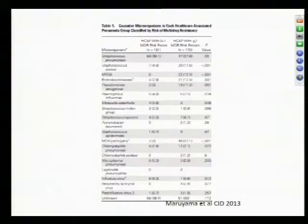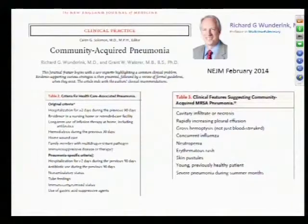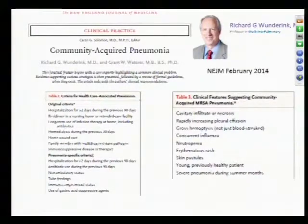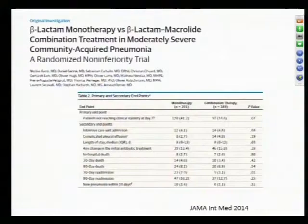Dr. Wunderink, a pulmonologist from Chicago on both the 2007 and current guideline committees, wrote a review last year addressing the delay in guideline updates. His main focus was risk stratification for HCAP and identifying specific risk factors for resistant organisms — particularly whether MRSA coverage is actually needed — which would guide antibiotic selection. That review is also recommended reading.